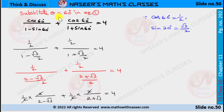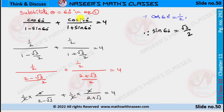Now substitute θ = 60° in equation 1. It can be written as cos 60° / (1 − sin 60°) + cos 60° / (1 + sin 60°) = 4. We already know that cos 60° = 1/2 and sin 60° = √3/2. Substituting these values: (1/2) / (1 − √3/2) + (1/2) / (1 + √3/2) = 4.